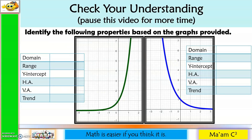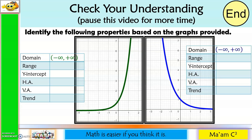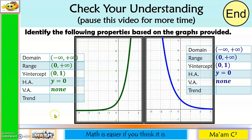Pause this video for more time. Now for the answers: both graphs have the same domain, from negative infinity to positive infinity, and the same range, from 0 to positive infinity with 0 not included. The y-intercept is (0, 1) for both. The horizontal asymptote is the x-axis, y = 0. There is no vertical asymptote for exponential functions. For the trend, the green one is increasing and the blue one is decreasing.